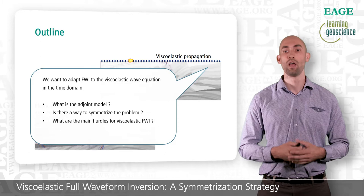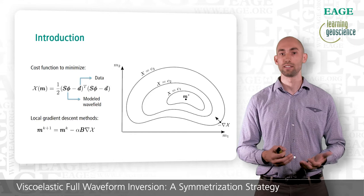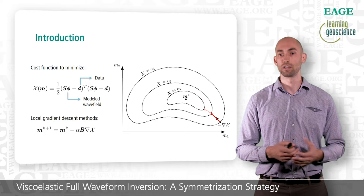Let's start by talking about the adjoint state method. In full waveform inversion, we measure the error between the recorded data d and the modeled data phi through a cost function chi. The assumption is that when this cost function is minimal — that is when our model reproduces the data well enough — the model is a faithful representation of the Earth. To minimize this cost function, we use local gradient descent methods that follow the opposite direction of the cost function gradient, nabla chi. After several corrections, we should arrive at a minimum of the cost function, as shown for a simplistic inversion of two parameters.